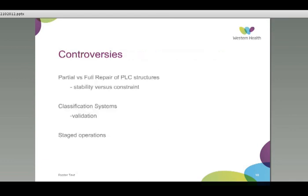There is no clear algorithm for management of these injuries and the best management is still being determined in the literature. There are those who advocate for only a partial repair — cruciate ligament and capsule — versus those who repair the entire suite of damaged structures. This is essentially an argument of stability versus constraint, with some evidence showing patients undergoing a full repair losing range of motion. The appropriate classification system is yet to be decided and validated. Controversy also surrounds staged operations: a single large procedure subjects the patient to only one anaesthetic but carries the risk of arthrofibrosis and post-operative stiffness.